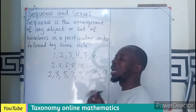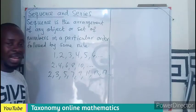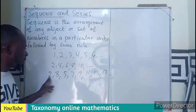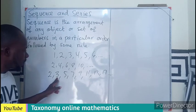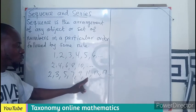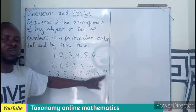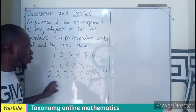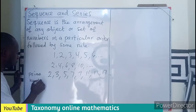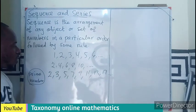Now let's consider whether prime numbers can be considered a sequence. They are a set of numbers arranged in a particular order, but do they follow a certain rule? If I add one to the previous term, I don't get the next one consistently — I need to add two, then four, then different amounts. The rule doesn't hold, so prime numbers are not considered a sequence because they don't follow a particular order of arrangement.